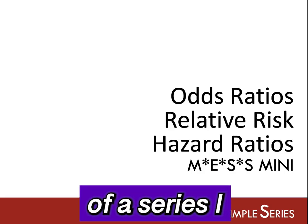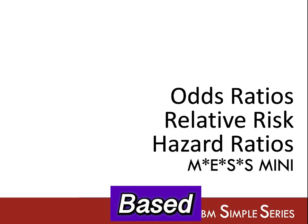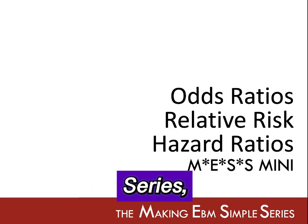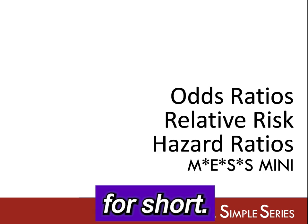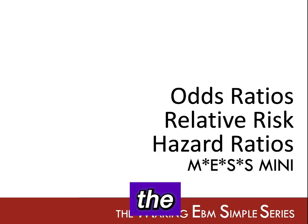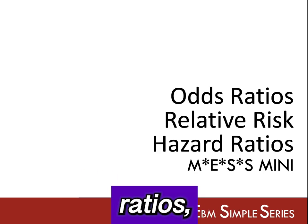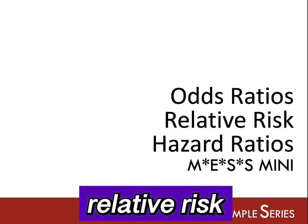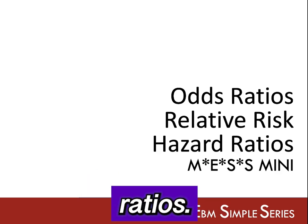This is part of a series called the Making Evidence-Based Medicine Simple Series, or MESS for short. In this MESS Mini, we'll be discussing the interpretation of odds ratios, relative risk, and hazard ratios.